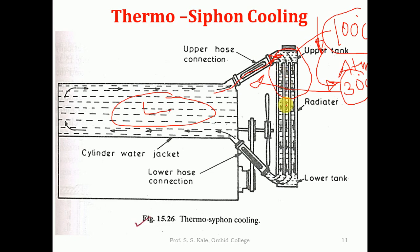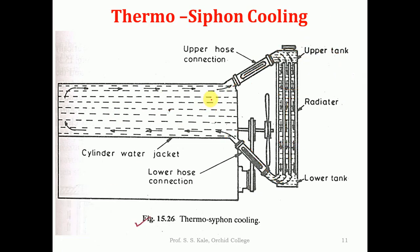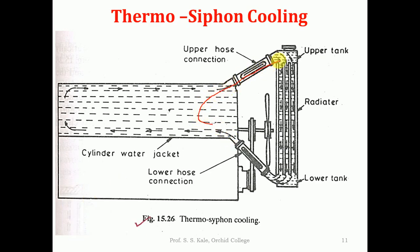Once the water becomes heavier, it starts moving downward. This cold, heavier water moves down through the lower hose and goes back to the engine. At the engine it gets heated again, and the same cycle repeats. Importantly, no external device like a pump is used — water travels from the engine to the radiator and back on its own. This continuous circulation cools the engine. This is all about the thermosyphon cooling system.